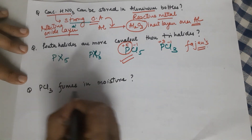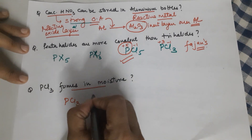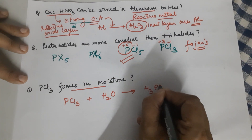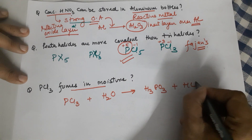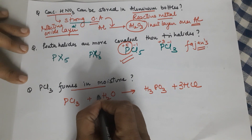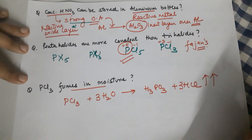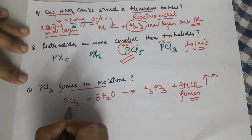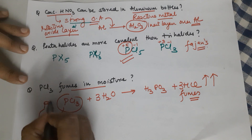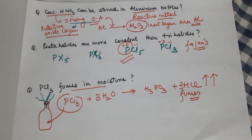Next: why does PCl₃ fume in moisture? PCl₃ when combined with moisture of the air leads to the formation of H₃PO₃ and HCl as a byproduct. Balancing the equation: 3 Cl on each side, so 3H₂O and 3HCl. Since HCl is a gas, you get fumes of HCl whenever you open a bottle of PCl₃ — it reacts with moisture in the air immediately.